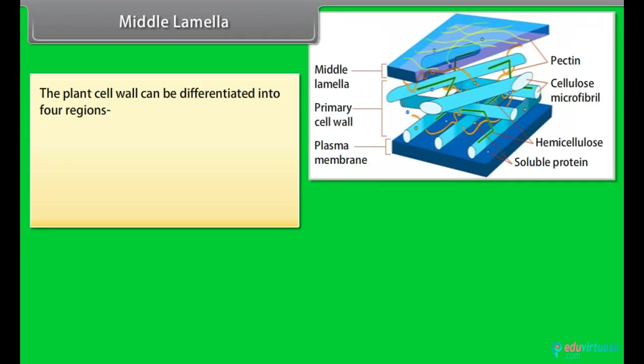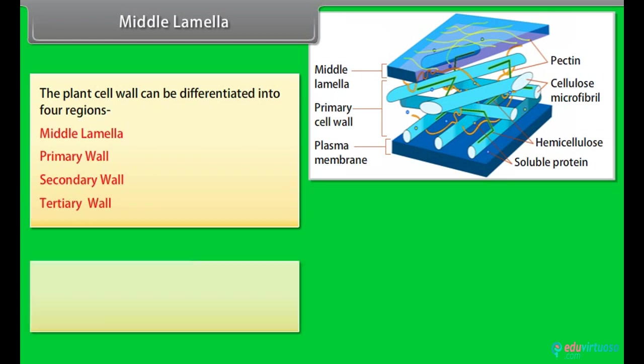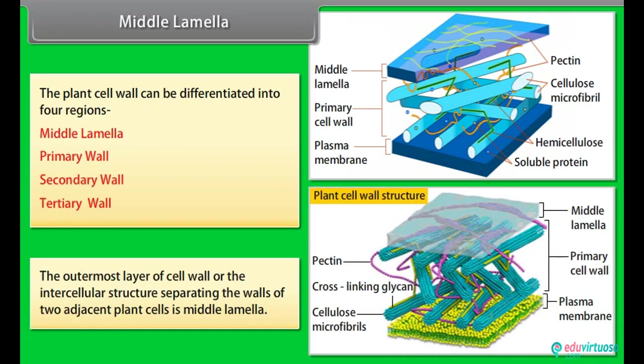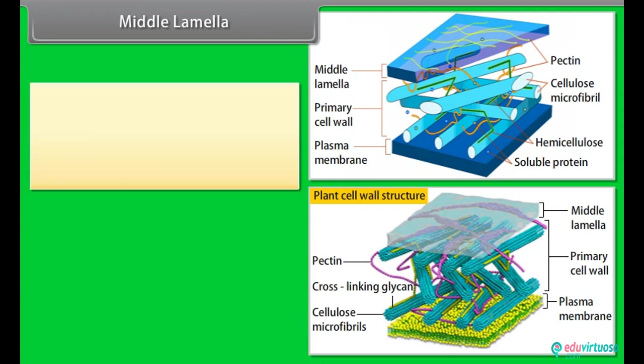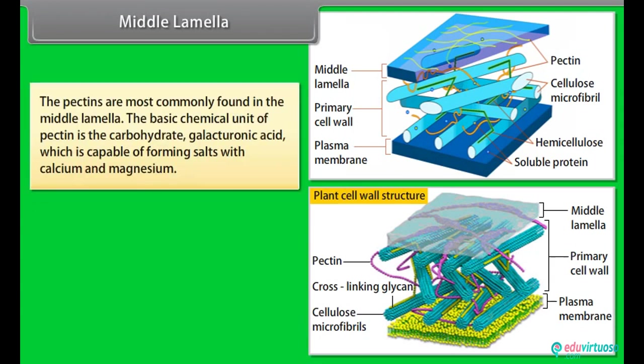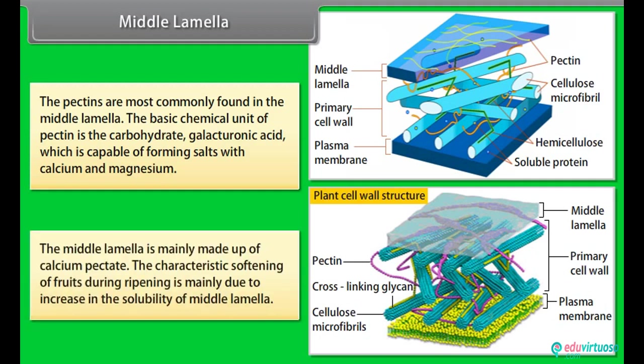Middle lamella: The plant cell wall can be differentiated into four regions - middle lamella, primary wall, secondary wall, tertiary wall. The outermost layer of cell wall or the intercellular structure separating the walls of two adjacent plant cells is middle lamella. The pectins are most commonly found in the middle lamella. The basic chemical unit of pectin is the carbohydrate galacturonic acid which is capable of forming salts with calcium and magnesium. The middle lamella is mainly made up of calcium pectate. The characteristic softening of fruits during ripening is mainly due to increase in the solubility of middle lamella.